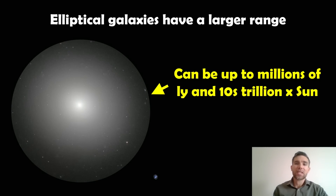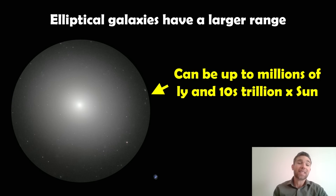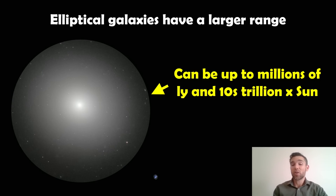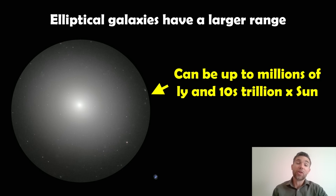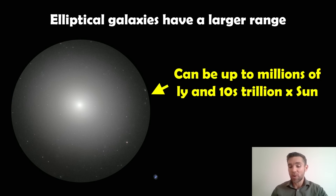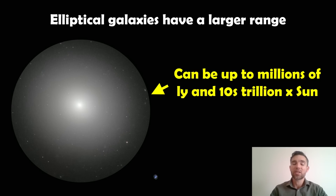Elliptical galaxies have much larger ranges of sizes and masses — up to millions of light years and tens of trillions of solar masses. This is because many elliptical galaxies grow from the merger of other galaxies, which is why they have no net rotation and their gas gets quenched during the merging process. So elliptical galaxies generally can be quite large and cover a wider range.